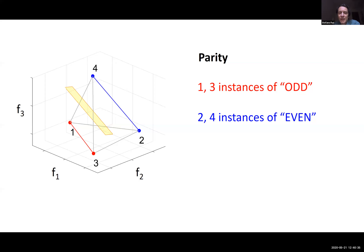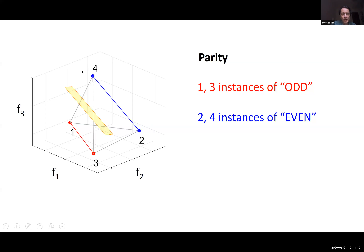Given that the representations are random, one nice property is that you can separate the points in any way you like. In particular, you can separate the two even samples — two and four — from one and three using a very simple linear classifier. A linear classifier in this space is a hyperplane, in this case a plane that separates points activating the output unit from those that don't. This yellow plane separates two and four from one and three, meaning you can decode parity and likely generalize.